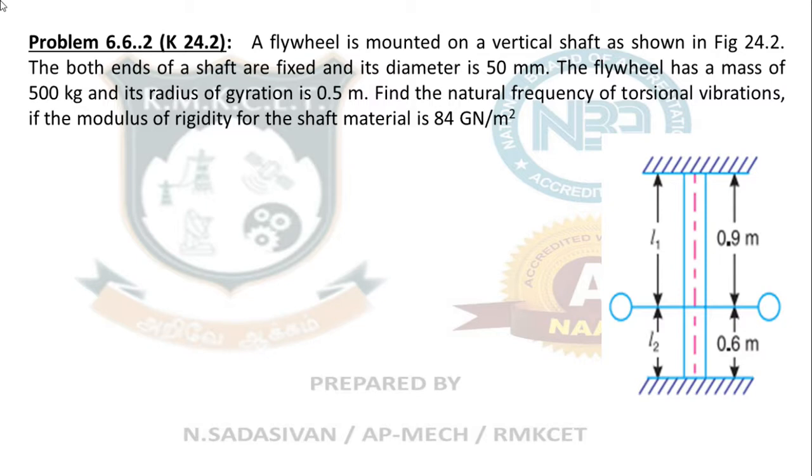Find the natural frequency of torsional vibration. The modulus of rigidity of the shaft material is 84 GN/m². With this same figure you have done one more problem in the previous transverse and longitudinal vibration section. The same diagram is here, but now we are going to calculate torsional vibration.